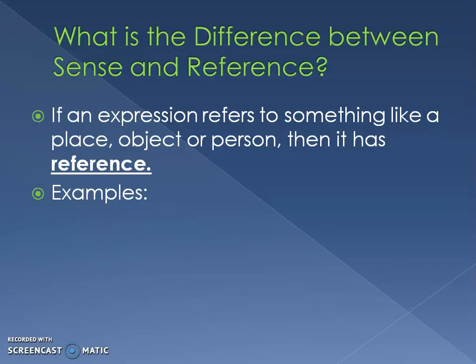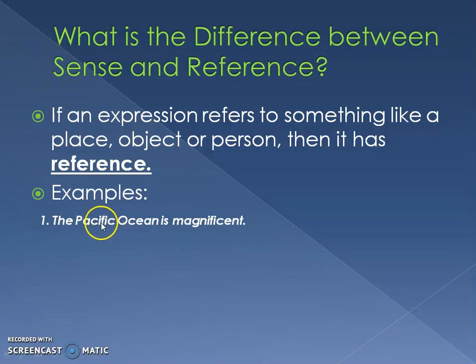So what's the difference between sense and reference? If an expression refers to something like a place, object, or person, then it has reference. For example: 'The Pacific Ocean is magnificent.' Here we're speaking about a specific ocean — the Pacific Ocean — so we're referring to a specific entity. So here we have reference.